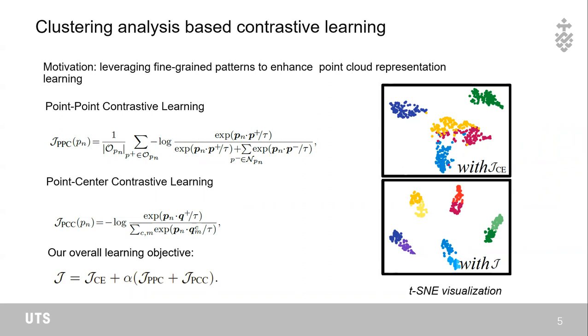Point-to-center contrastive learning contrasts the similarity between points and cluster centers in the embedding space. Minimizing these two losses leads to a well-structured embedding space, as shown in the visualization. Points with similar patterns are grouped closely, while points with dissimilar patterns are separated.